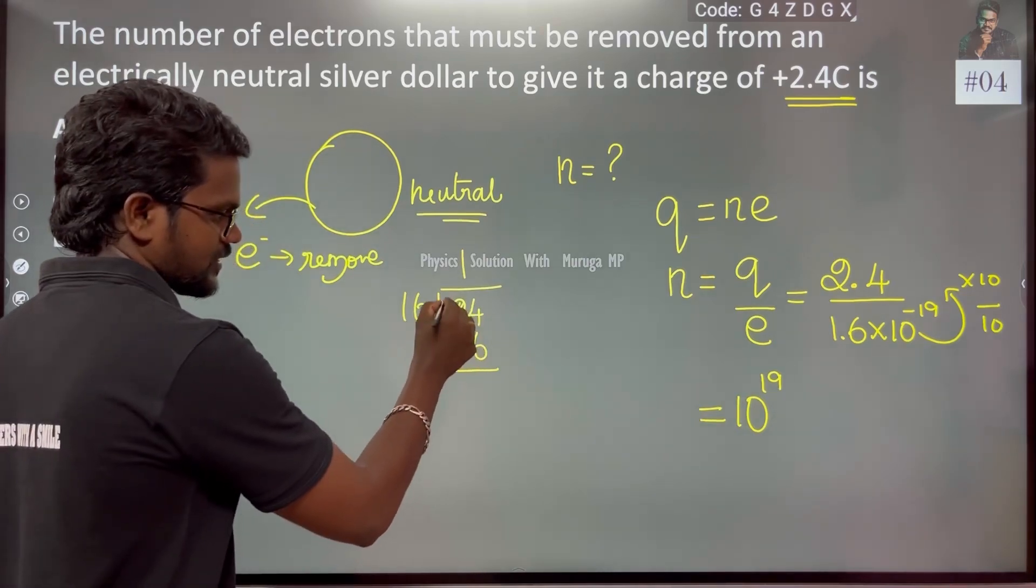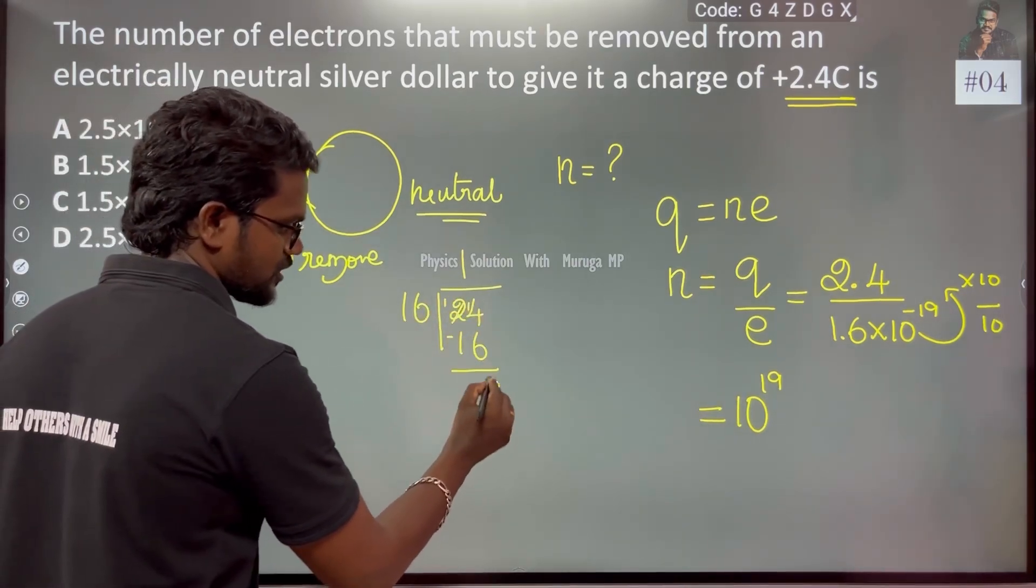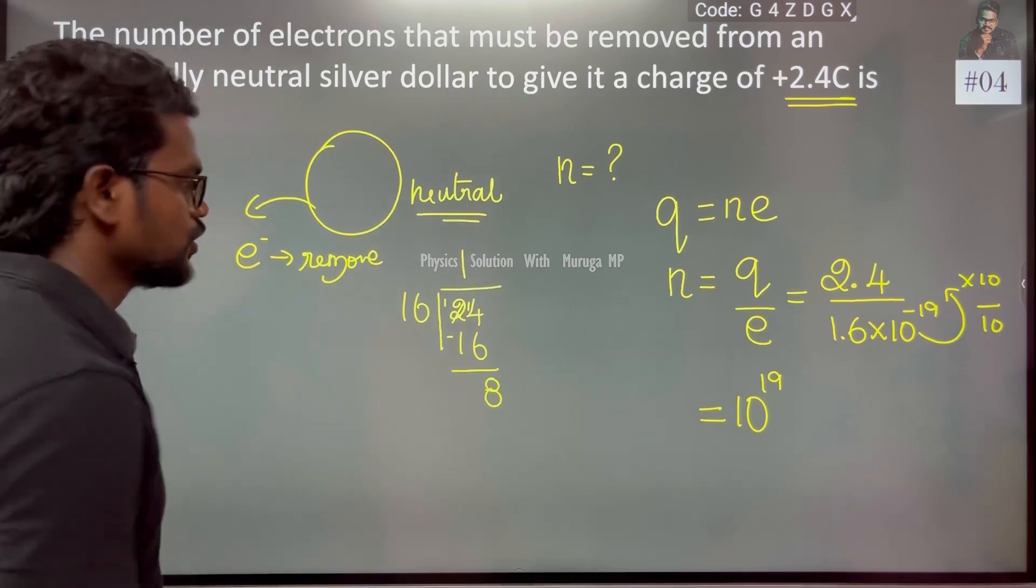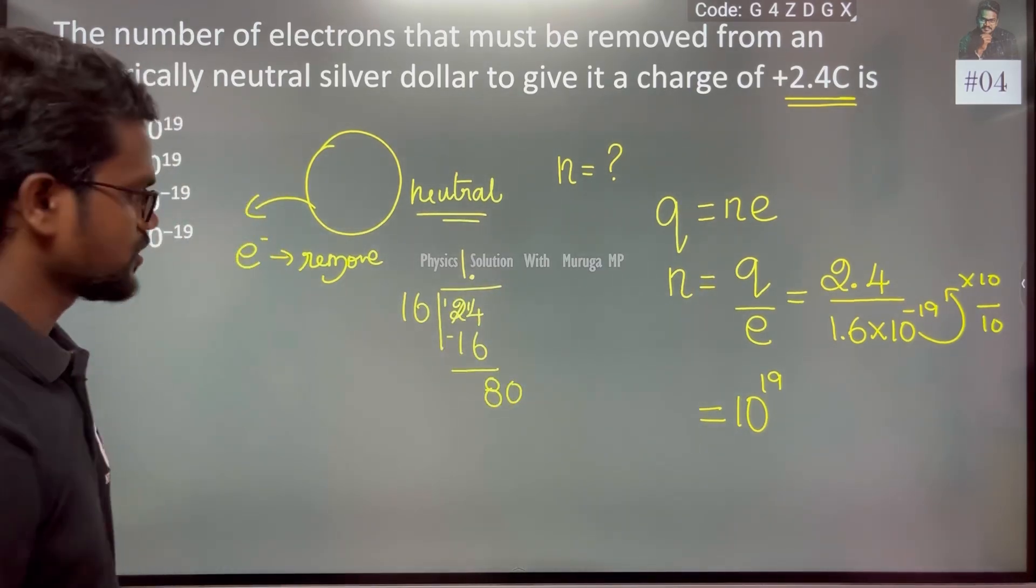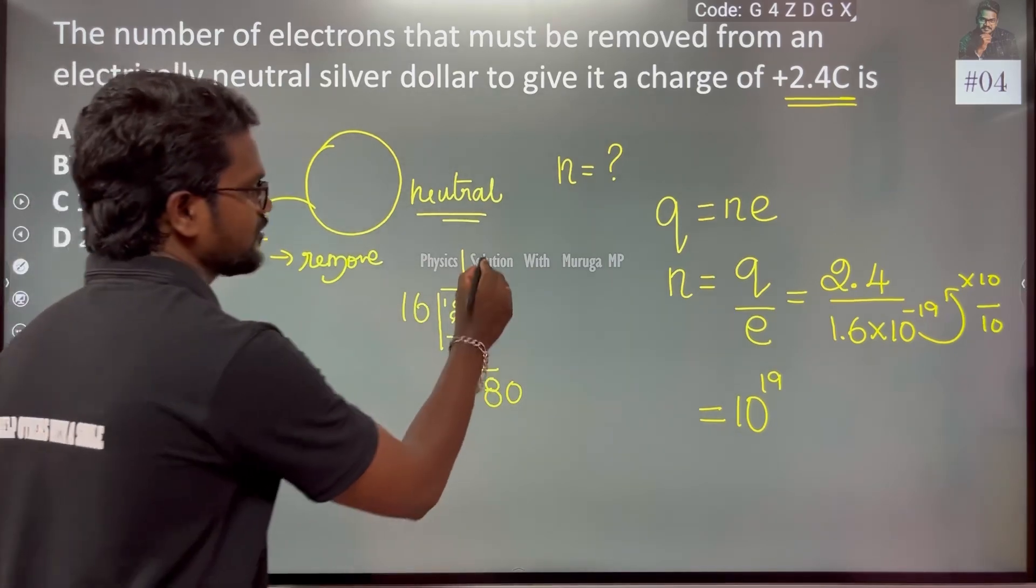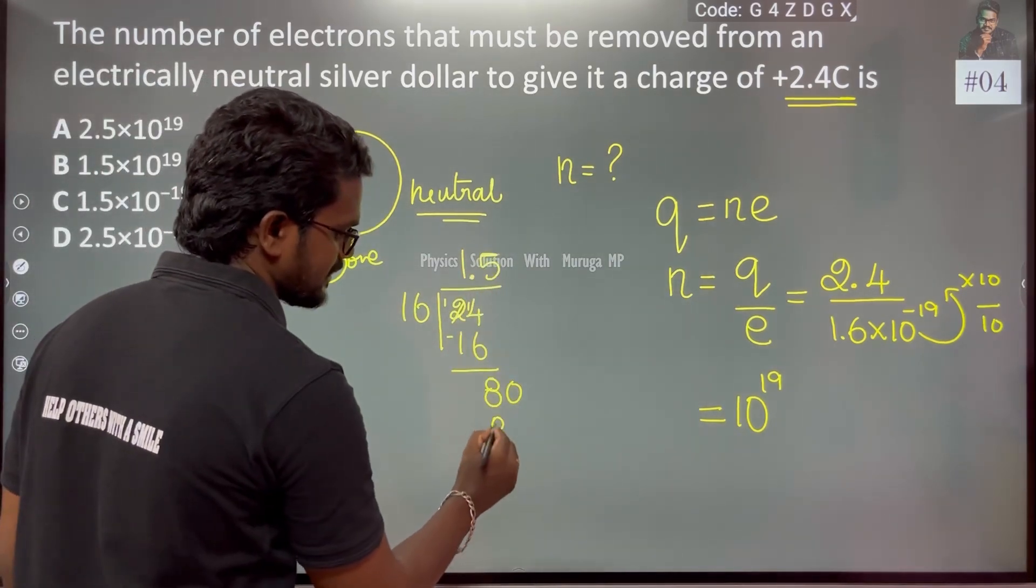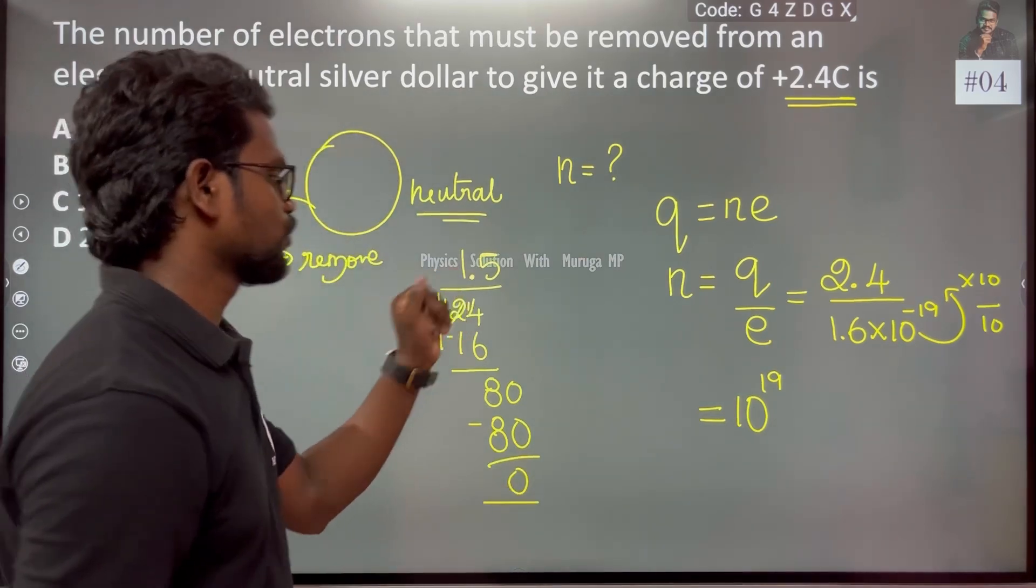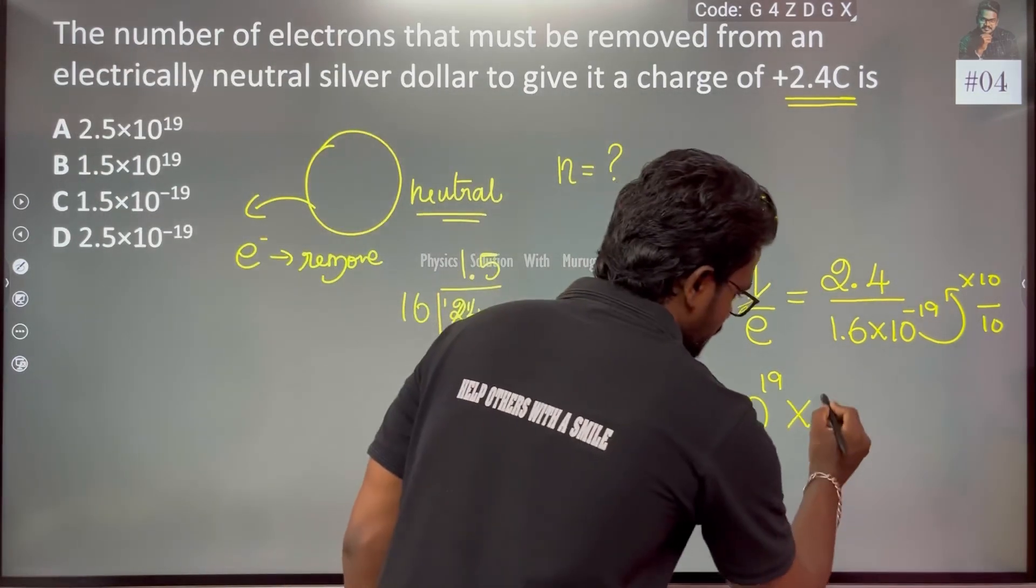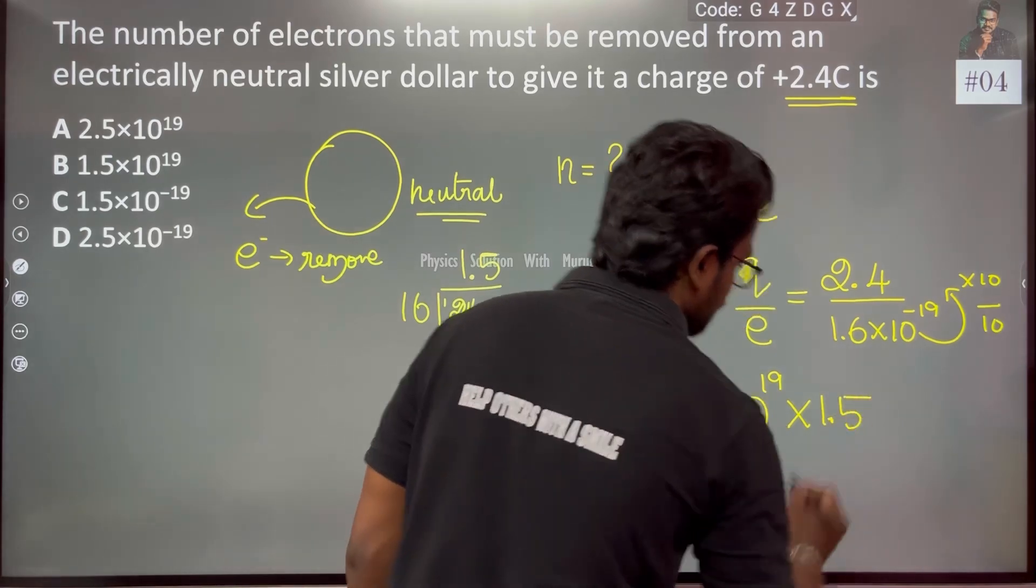14 less, 6 and 5 is 8, 1.0. We know 16 times 5 is 80. The value is 1.5, 10 to the power 19. 1.5, this is n.